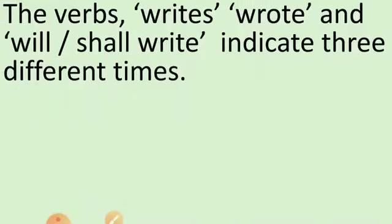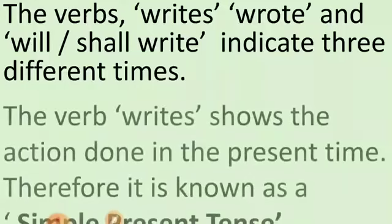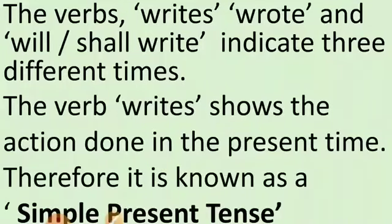Now, we can say the verbs writes, wrote, will/shall write indicate 3 different times. In the first sentence, Mona writes a letter — the verb 'writes' shows the action done in the present time. Therefore, it is known as simple present tense.